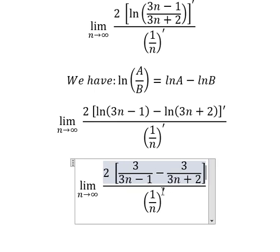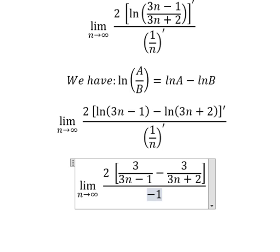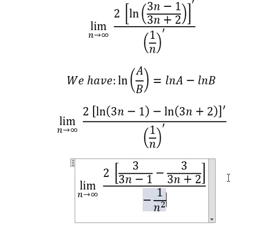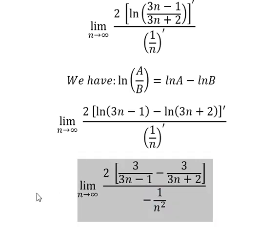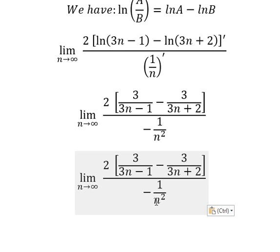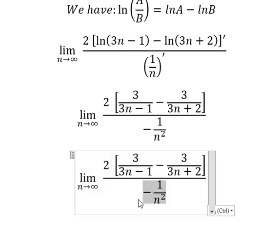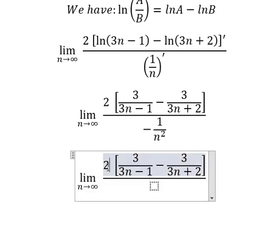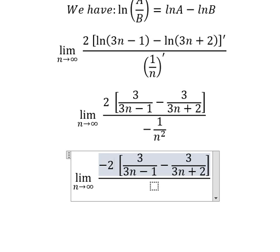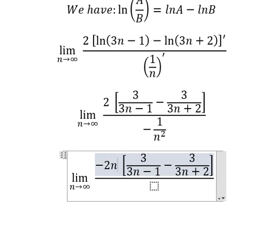This one we have negative one over n squared, so I will put negative one over n squared go to the numerator. And we have negative negative number two elsewhere.